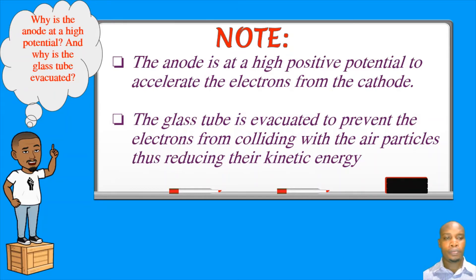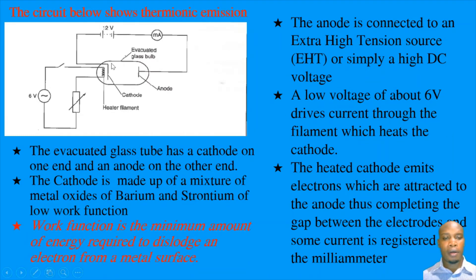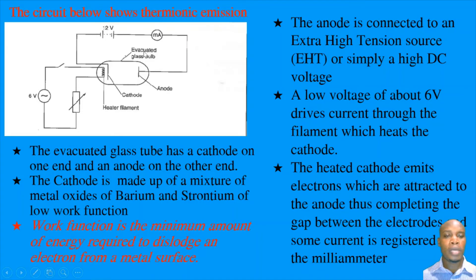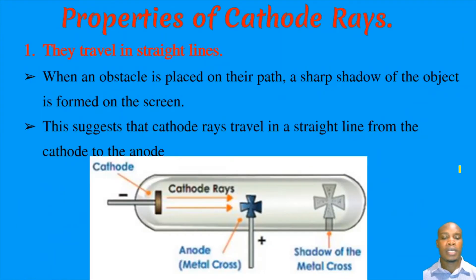Why is the anode at a high potential, and why is the glass tube evacuated? The anode is at a high positive potential to accelerate the electrons from the cathode. The glass tube is evacuated to prevent the electrons from colliding with air particles, which would reduce their kinetic energy. If there were air particles present, they could prevent the electrons from reaching the anode by causing them to collide and move in different directions.